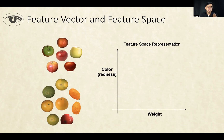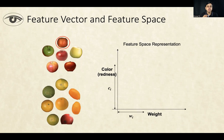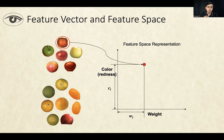Now what does that mean? If I take a particular fruit — let's say this particular apple — and I measure its color or redness, I would get some number. I measure its weight, I get another number. And if I think of the color and the weight as a feature vector, you can think of the sample as a point in this two-dimensional feature space where the axes represent color and weight. That is the way to think about a feature vector, and the space in which these feature vectors are embedded into is called a feature space.